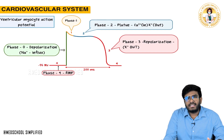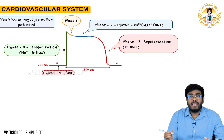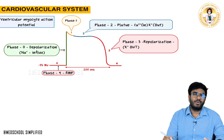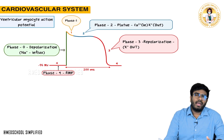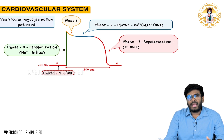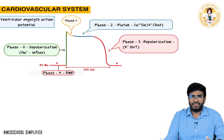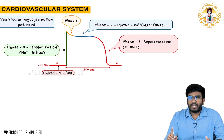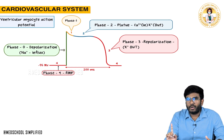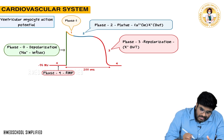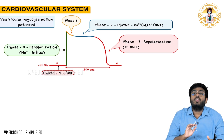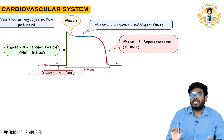Welcome back guys. After discussing about the SA nodal action potential, now let's discuss about how the action potential happens in the ventricular myocyte. Ventricular myocyte is not a nodal tissue — it's just a muscular tissue. As it's a muscular tissue, it's not undergoing self-depolarization.